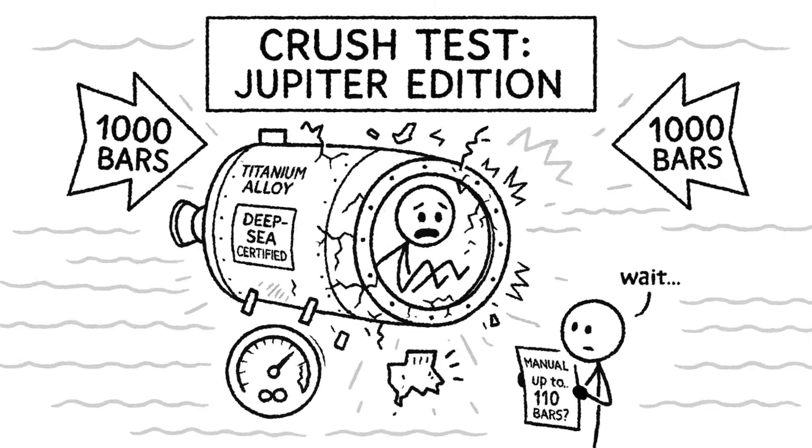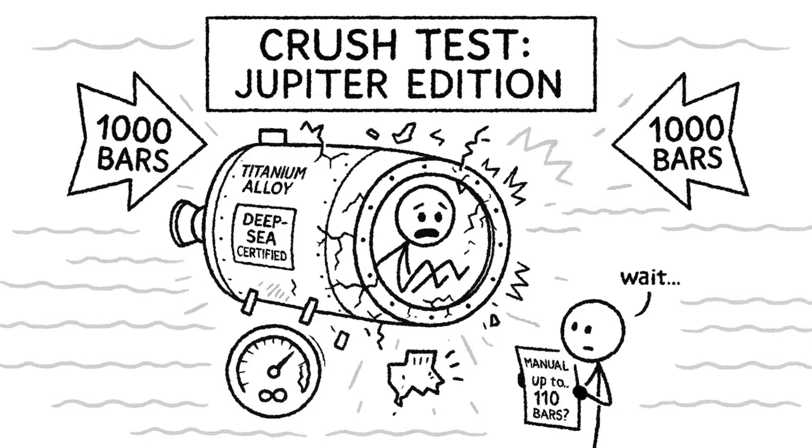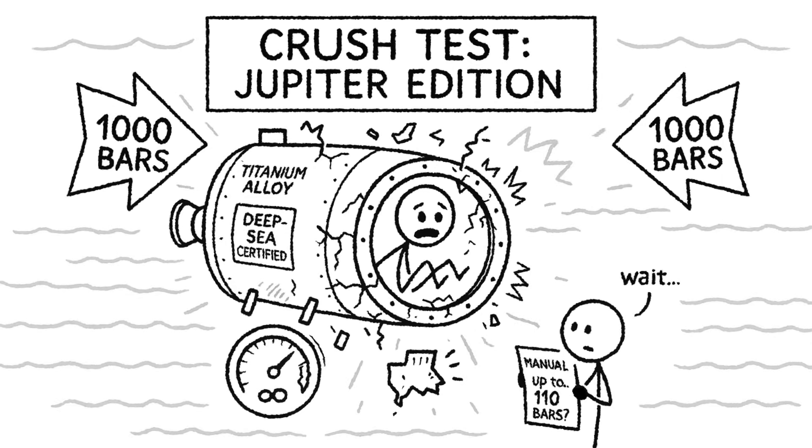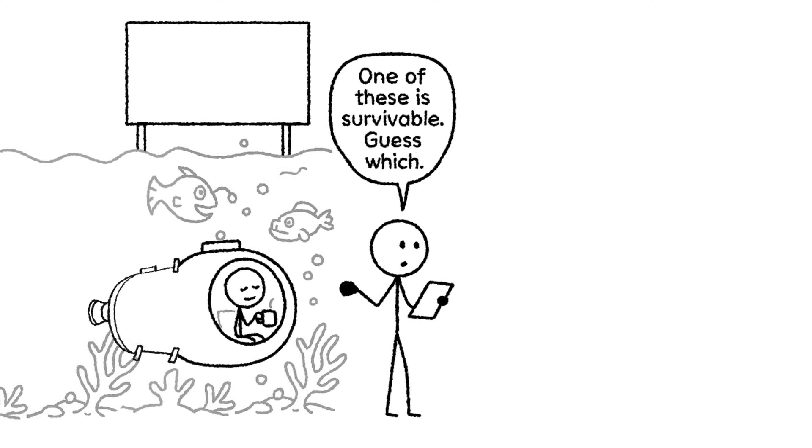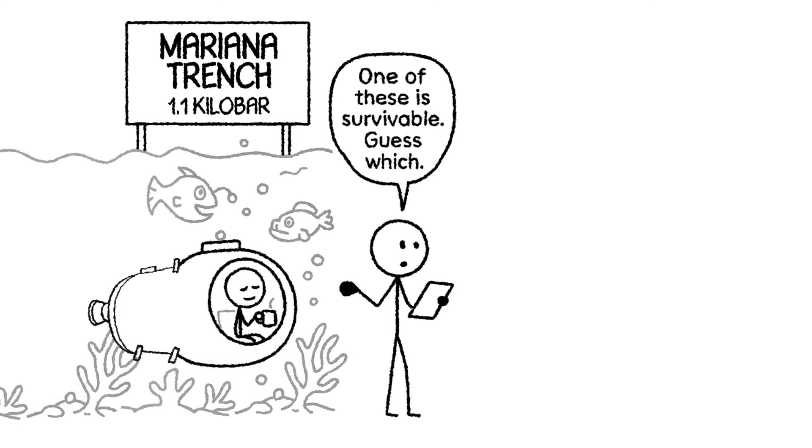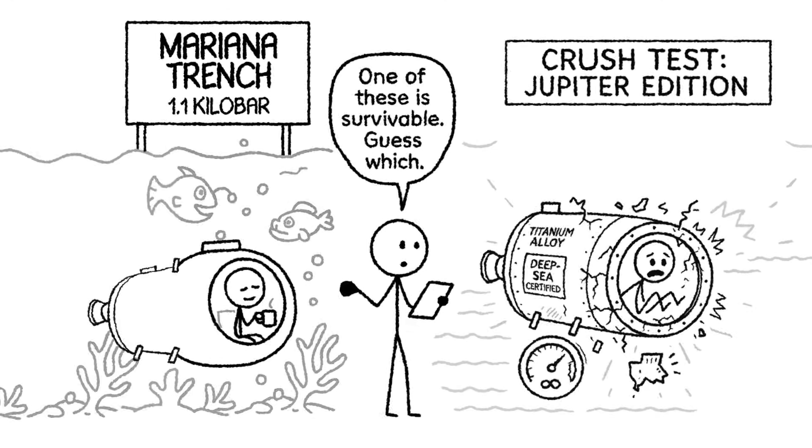At 1,000 bars of pressure, about 1,000 times Earth's sea-level atmosphere, materials face forces far beyond anything experienced on our planet. Even high-grade materials used in deep sea submersibles would begin to deform or fail. For comparison, the pressure at the bottom of the Mariana Trench is about 1.1 kilobar. Jupiter delivers nearly 1,000 times that, with no solid surface to stop the squeeze.